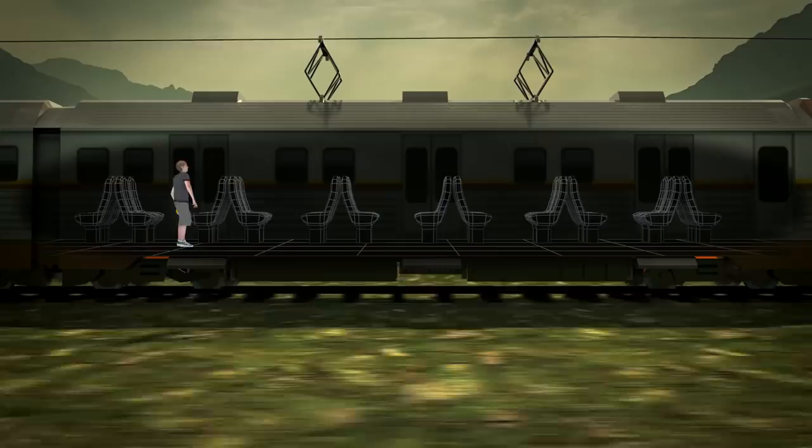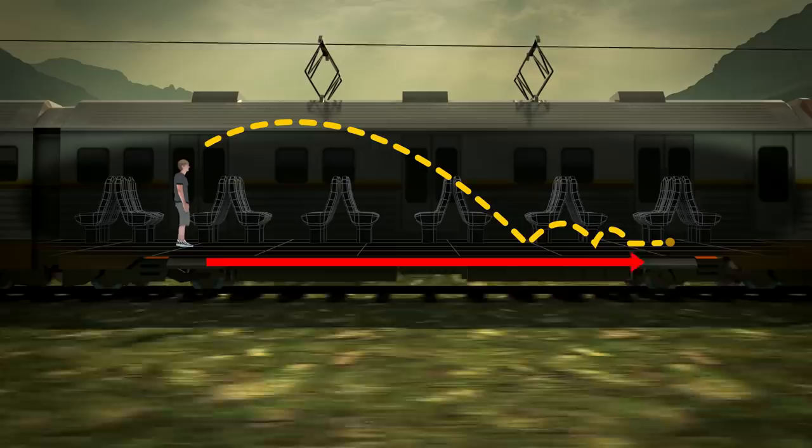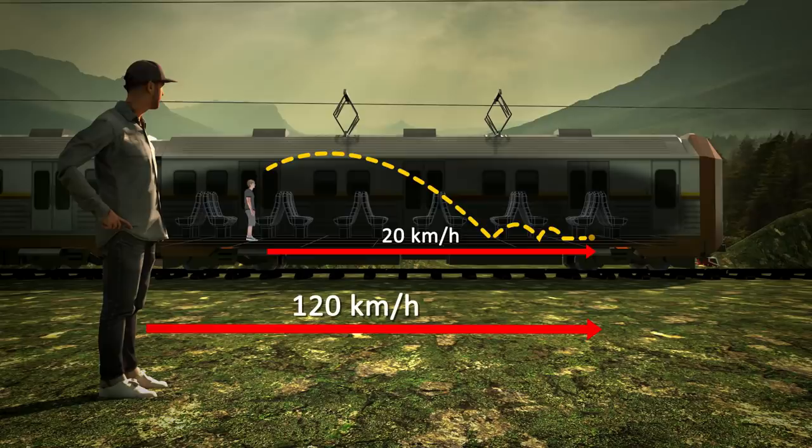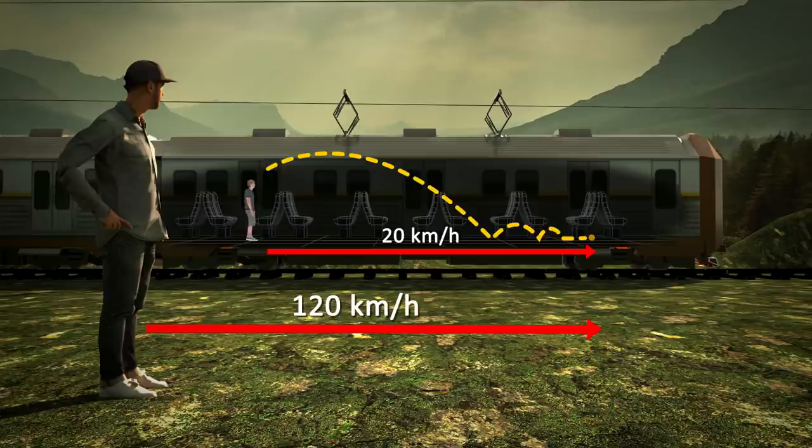If you were on a train moving at 100 kilometers per hour and threw a ball at 20 kilometers per hour in the same direction as the train, the ball would move at 20 kilometers per hour from your perspective. But from the perspective of someone standing still outside on the ground, the ball would be moving at 120 kilometers per hour - the speed of the train plus the speed of the ball. Simple enough.